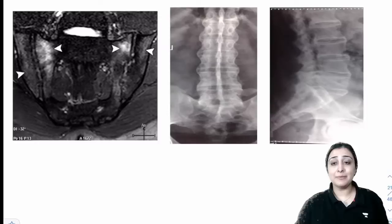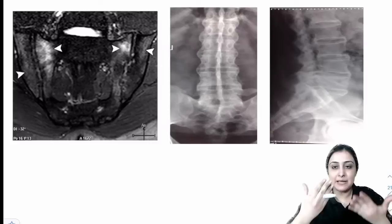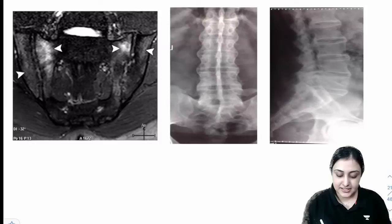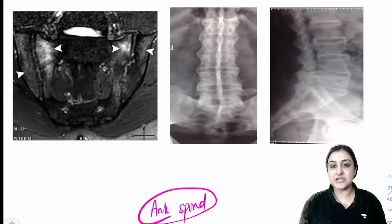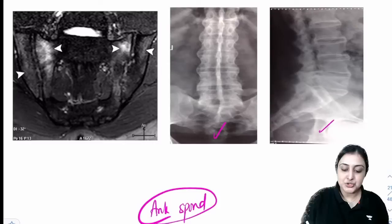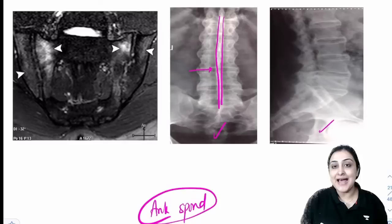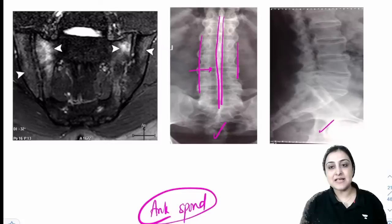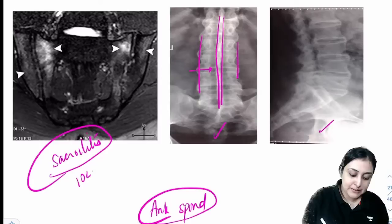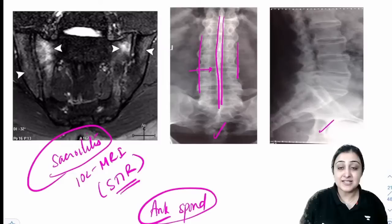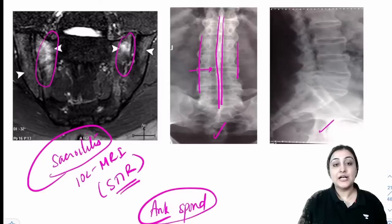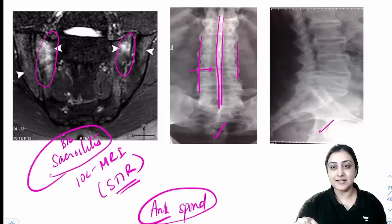Ankylosing spondylitis: young male with inflammatory backache and positive modified Schober's test. HLA-B27 positive in 95%. Late X-ray signs: bamboo spine (fused), dagger sign (ossified interspinous ligament), tram-track sign. Earliest finding: sacroiliitis on MRI using STIR sequence (fat-suppressed), showing hyperintensities. Investigation of choice: MRI. Bilateral sacroiliitis = ankylosing spondylitis; unilateral = consider TB.